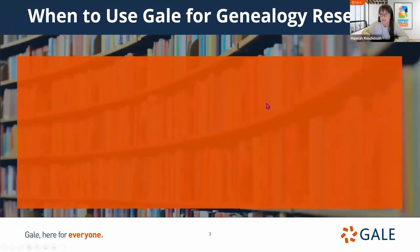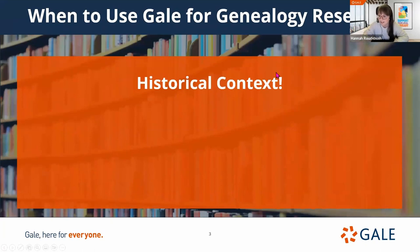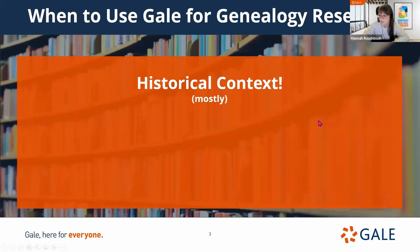The first question is when to use Gale for genealogy research. If you're familiar with the Gale databases, you're probably wondering how to use this in your genealogical research. The answer is historical context, mostly. Most of what we're going to be looking at today is primary sources to give you historical context into your genealogical research. There are a couple instances where you may be able to view these resources in a more targeted and specific way. This historical context includes political, social, cultural, and economic factors — the local histories of where people were born, the events that shaped their lives, and the living conditions they lived through, giving us a more well-rounded look into our ancestry.